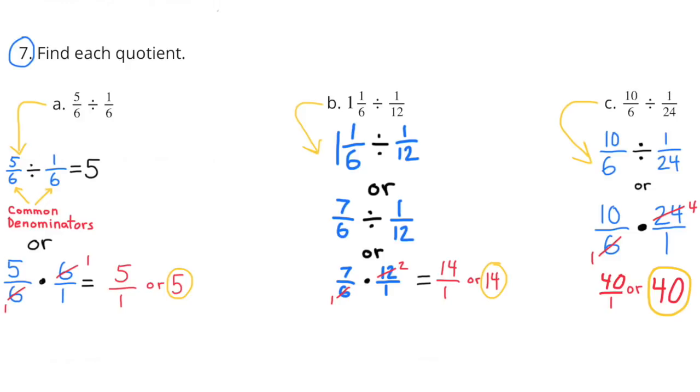Or you can treat it as if you didn't notice it had common denominators, and you can multiply five-sixths times the reciprocal of one-sixth. So that would be five-sixths times six-over-one, which equals five-over-one, or five.